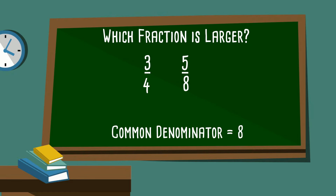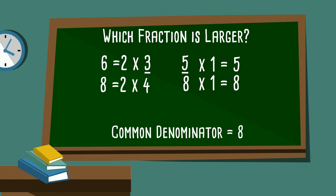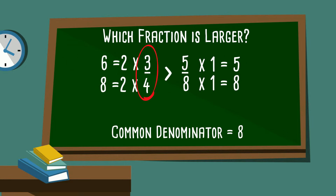A common denominator of four and eight is eight. Four goes into eight two times, so I'm going to multiply the denominator: four times two is eight, and the numerator three times two is six. With five-eighths, eight goes into eight one time, and five times one is five. So we have six-eighths and five-eighths. Now with a common denominator, it's easy to tell that six-eighths is larger than five-eighths, so three-fourths is larger than five-eighths.